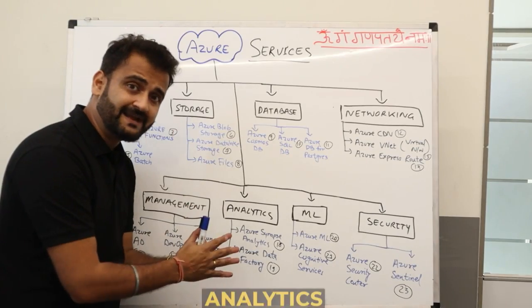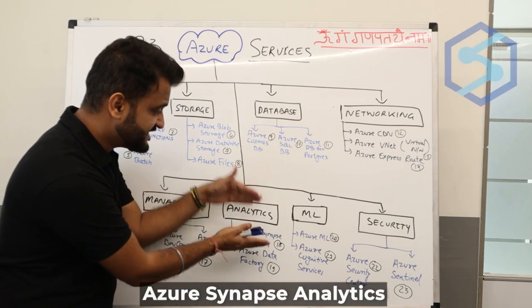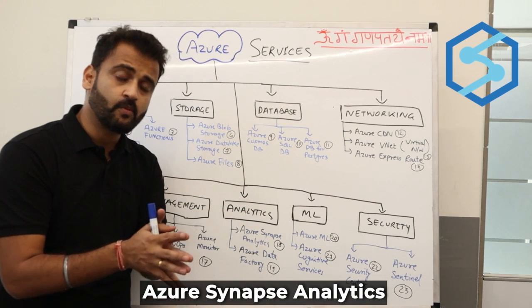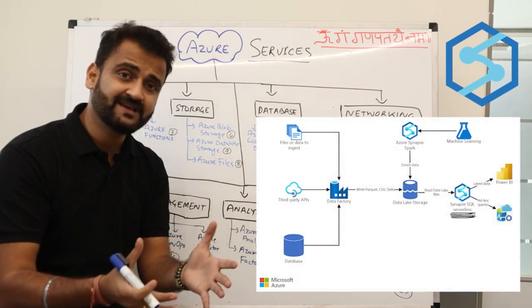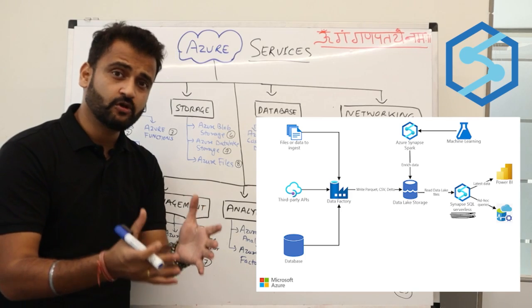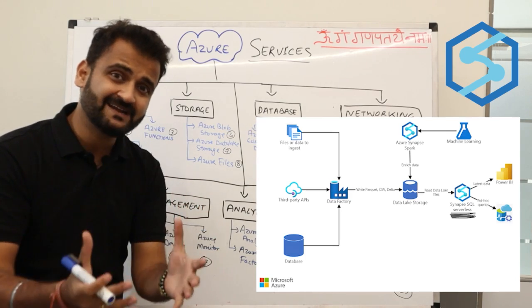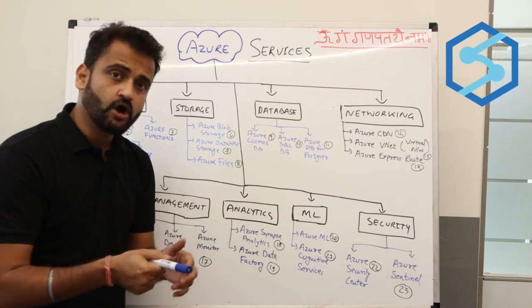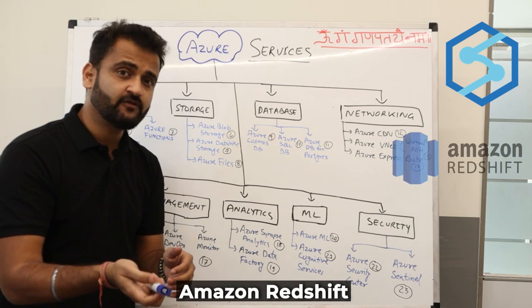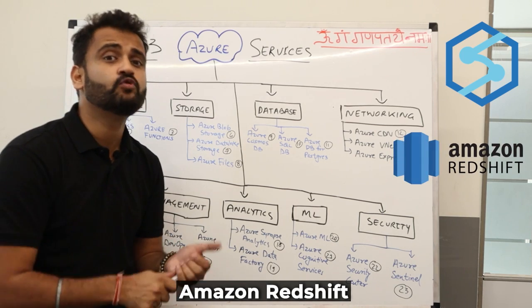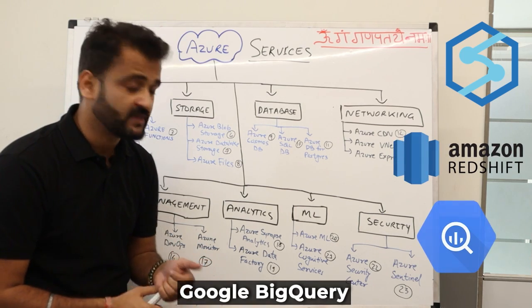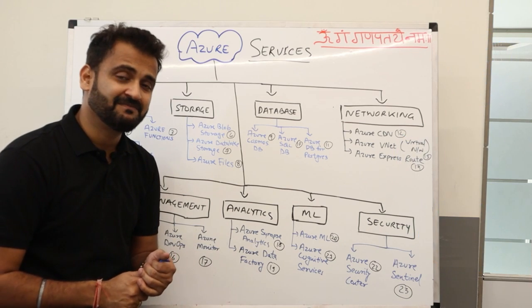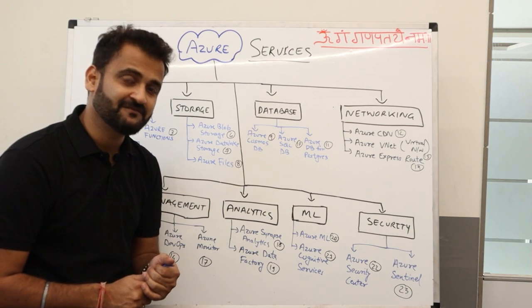Moving to the analytics side, we have Azure Synapse Analytics, which provides data warehousing and analytics services on Azure. On Amazon the equivalent is Redshift, and on Google we have Google BigQuery. Synapse Analytics handles your data warehousing workloads.